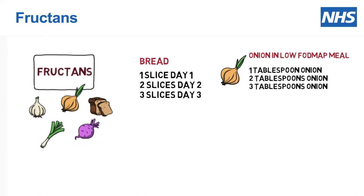Onion is another fructan I really want to look at. Even if you don't eat onion particularly, you will find it cropping up in meals — particularly when you go out to eat or are at somebody's house. You need to know if somebody has put a little bit of onion in a meal, do you need to worry? The test we suggest is one tablespoon of onion on day one, two tablespoons on day two, and three tablespoons on day three.